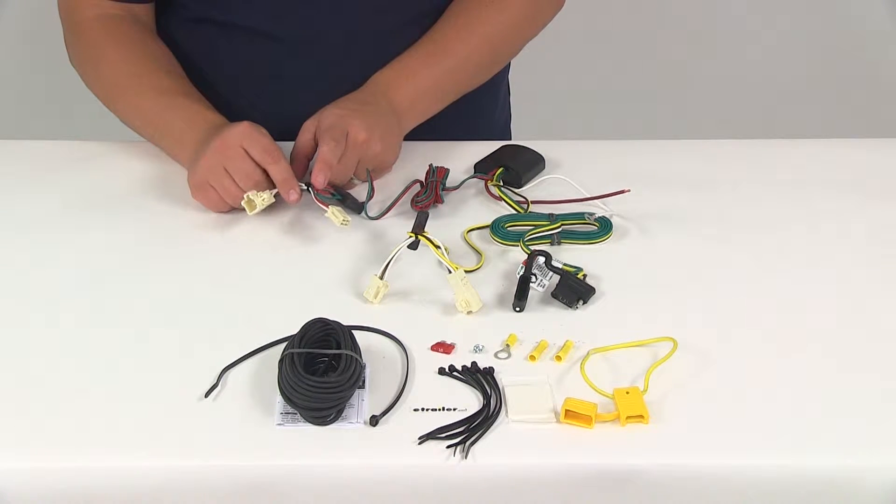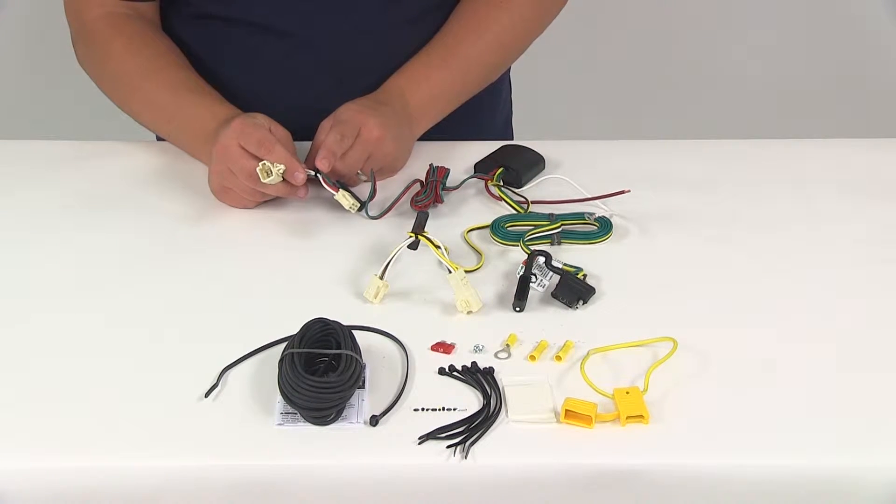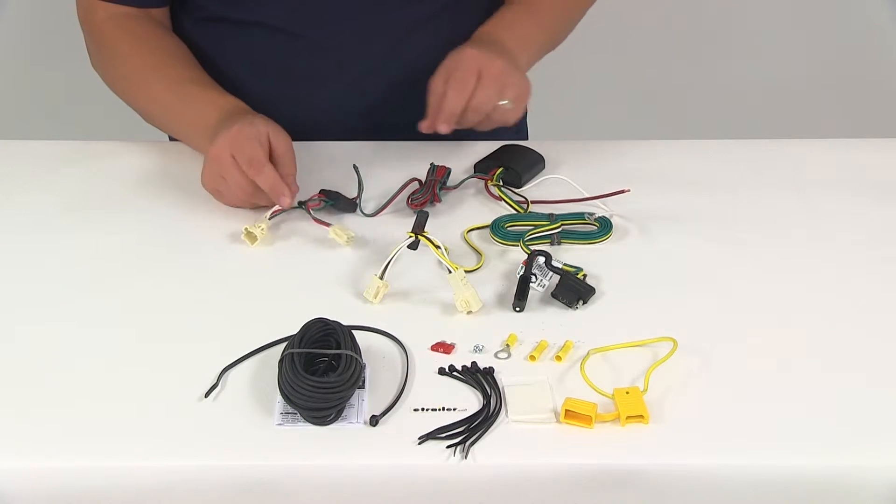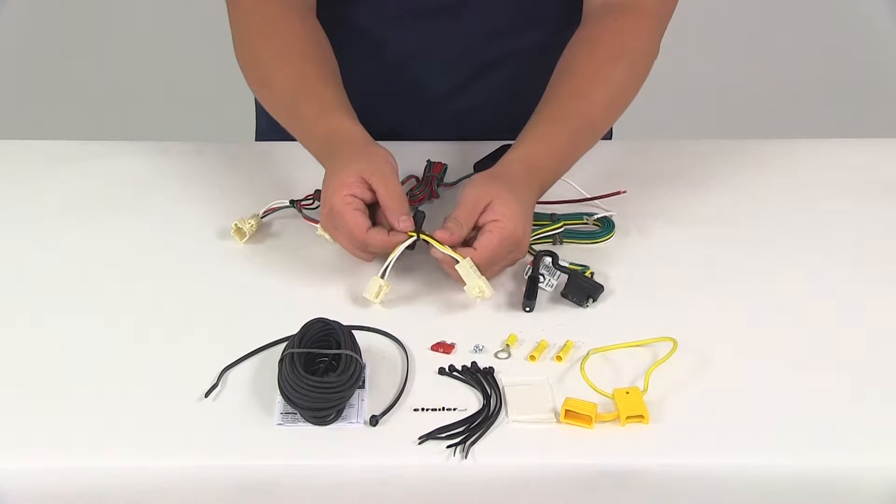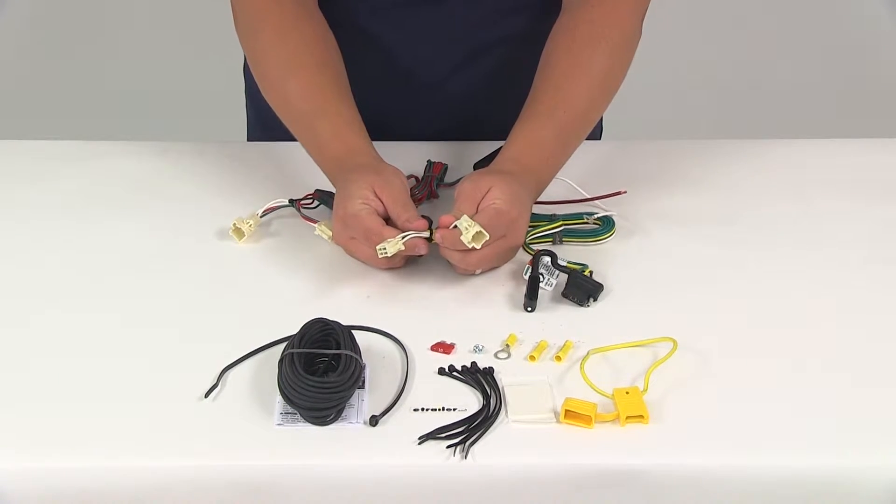The side with the green and red wire is going to run to the passenger side of your vehicle. That's why it's got a little bit more wiring. And then the side with the yellow and brown wires, that's going to run to the driver's side of the vehicle.